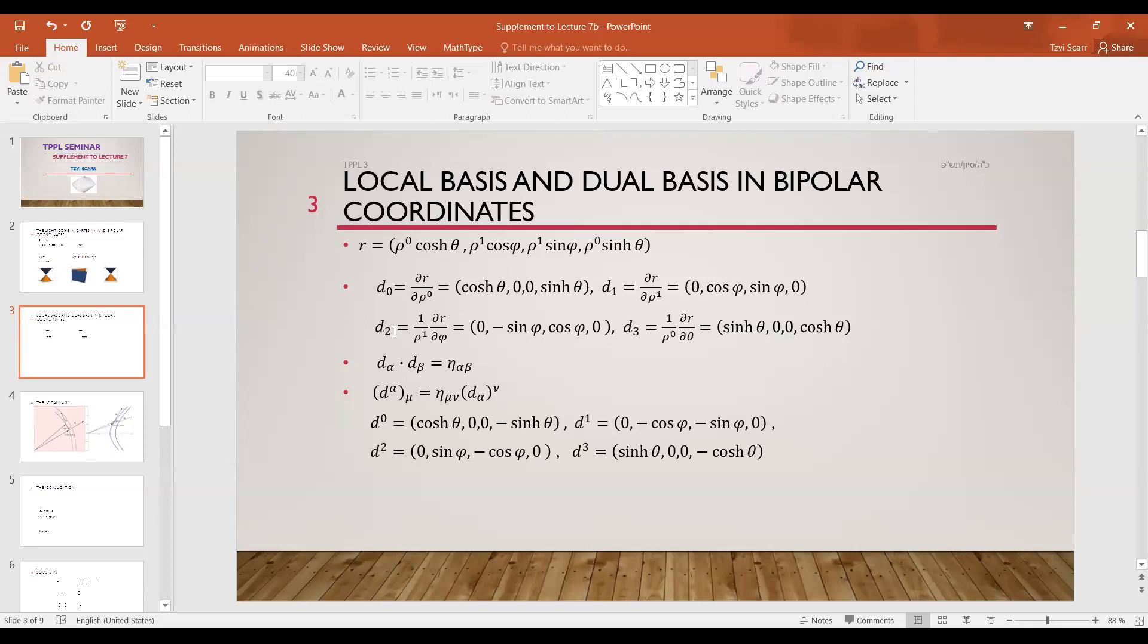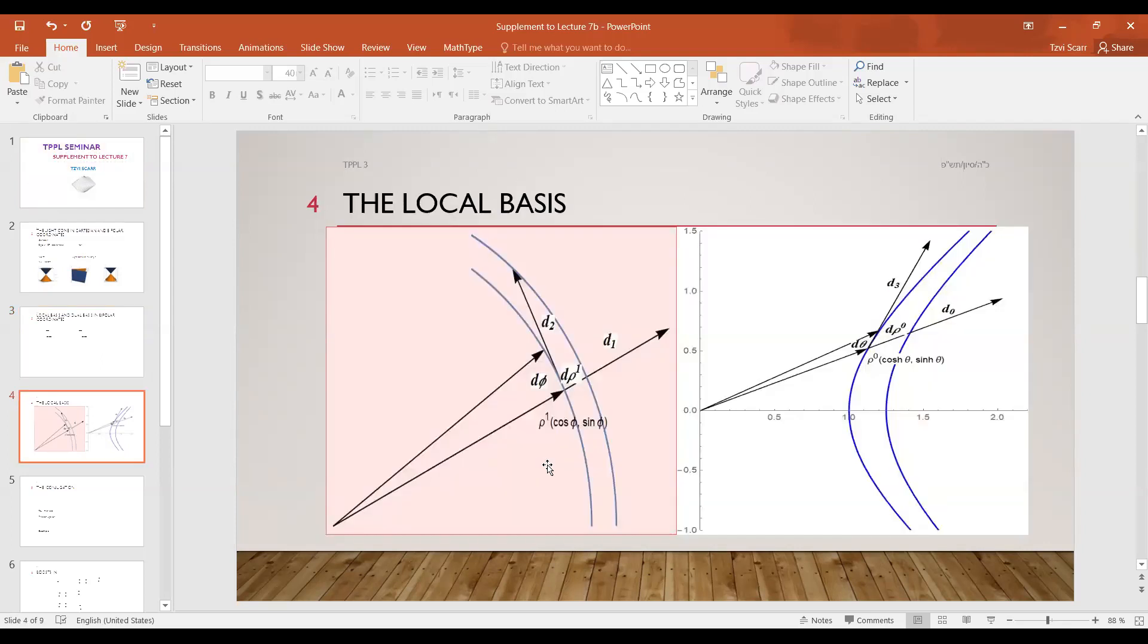We'll also need later today in Jacob's presentation the corresponding dual basis, which means d with an upper—it's not really an index, it's a label—but these will now be covectors and so the components have a lower index. You obtain the dual basis by applying the metric to the vector basis, to the original basis, and just lower. What this means, since it's just the Minkowski metric, it means you apply minus one to the second, third, and fourth components. So d0 becomes cosh 0, 0 minus, and d1 becomes 0 minus cosine minus sine, minus on. You just put a minus in the last three components.